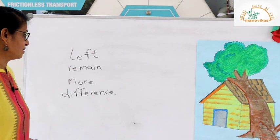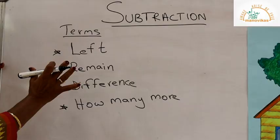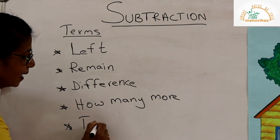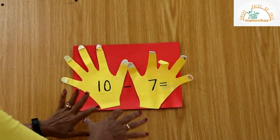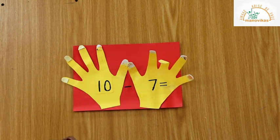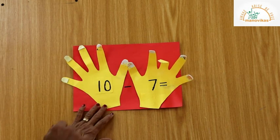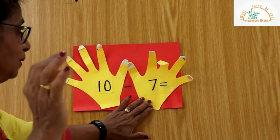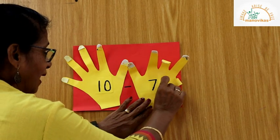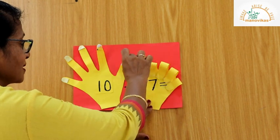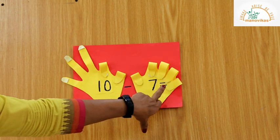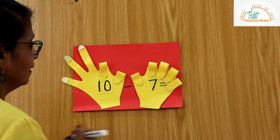To get back my original number I need to add another 6 trees to get 28. Today's chapter is on subtraction. Terms used in subtraction: left, remain, difference, how many, take away. Now we will subtract on our fingers — there are 10 fingers and the number to be taken away is 7. Always subtract a smaller digit from the bigger number, and do backward counting: 9, 8, 7, 6, 5, 4, 3.